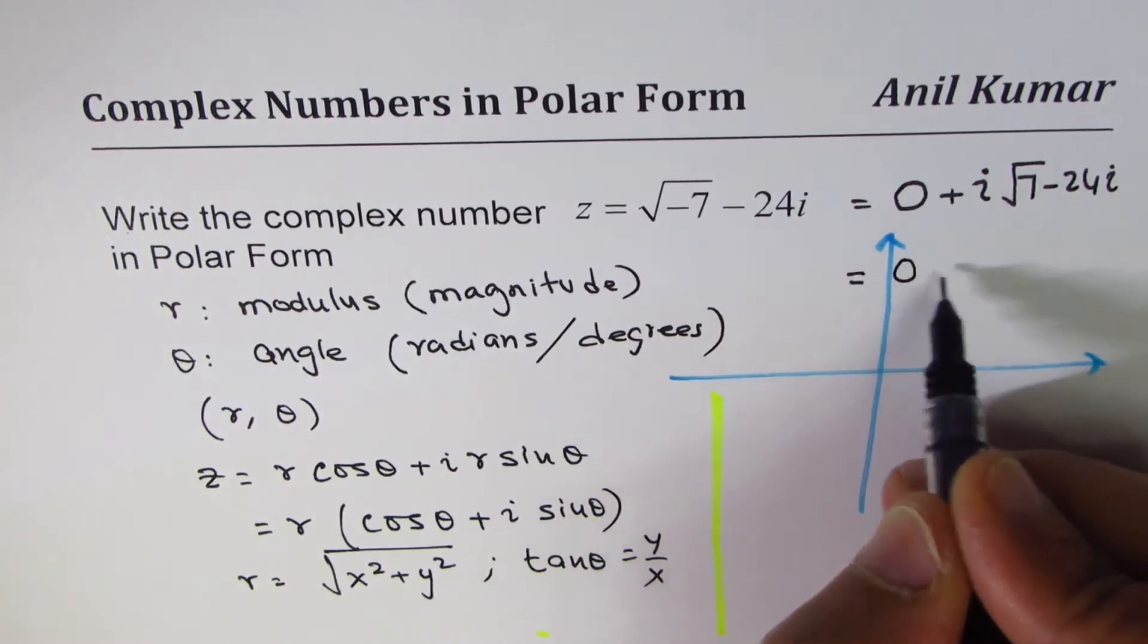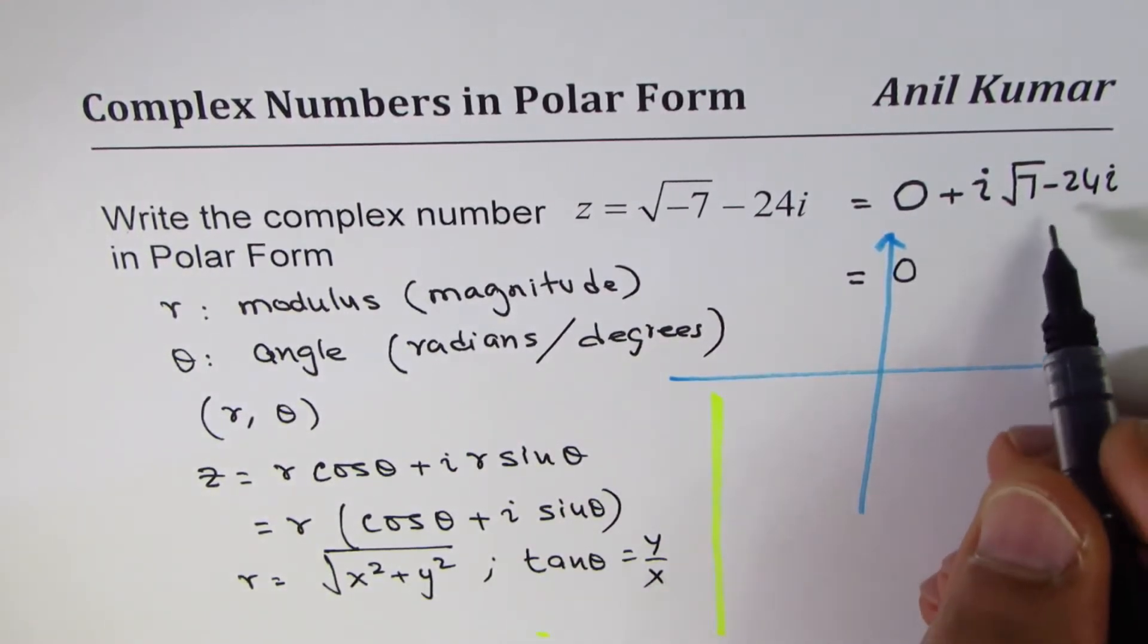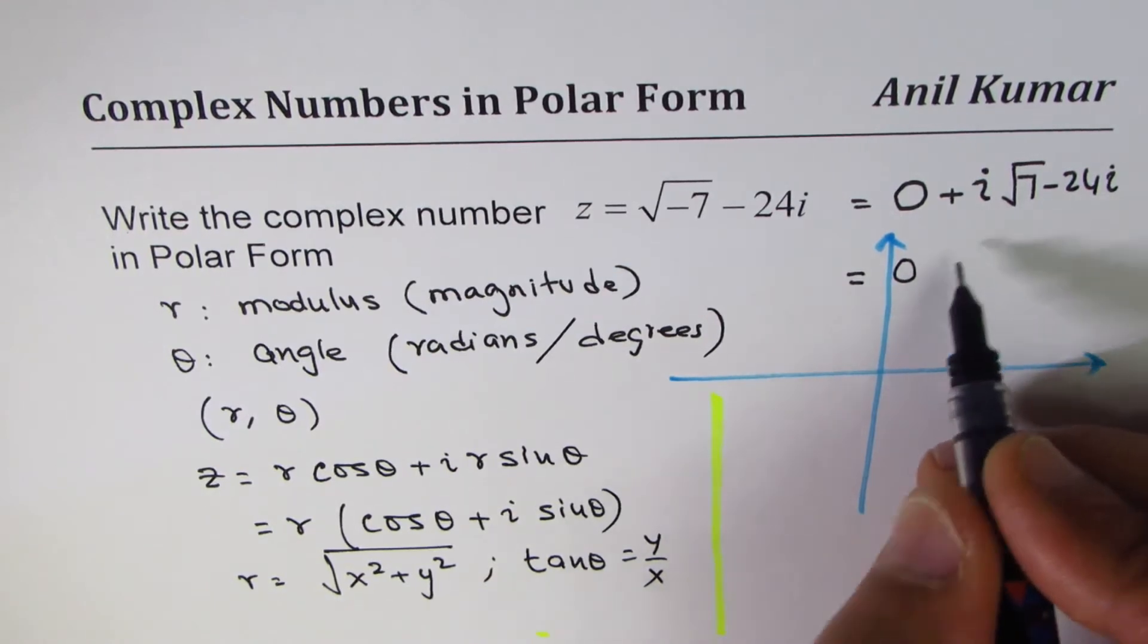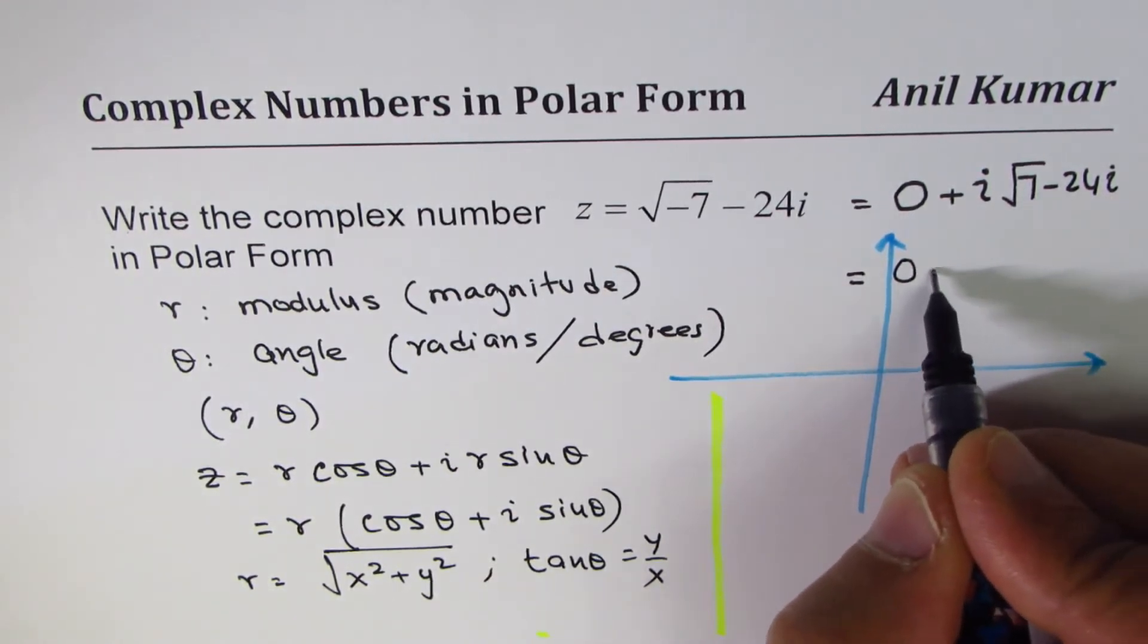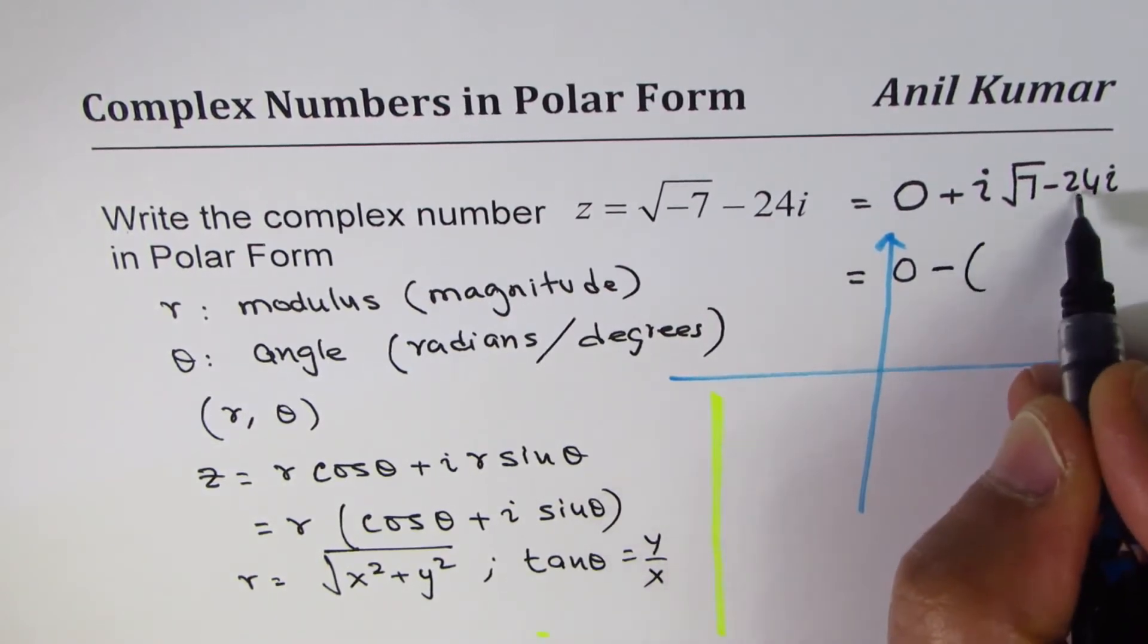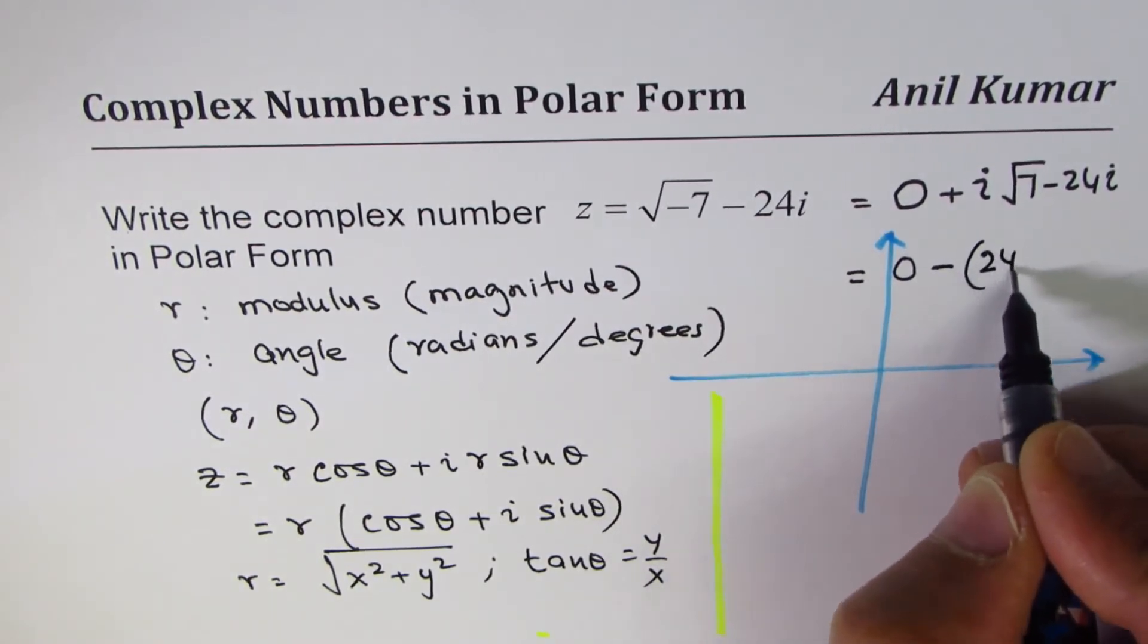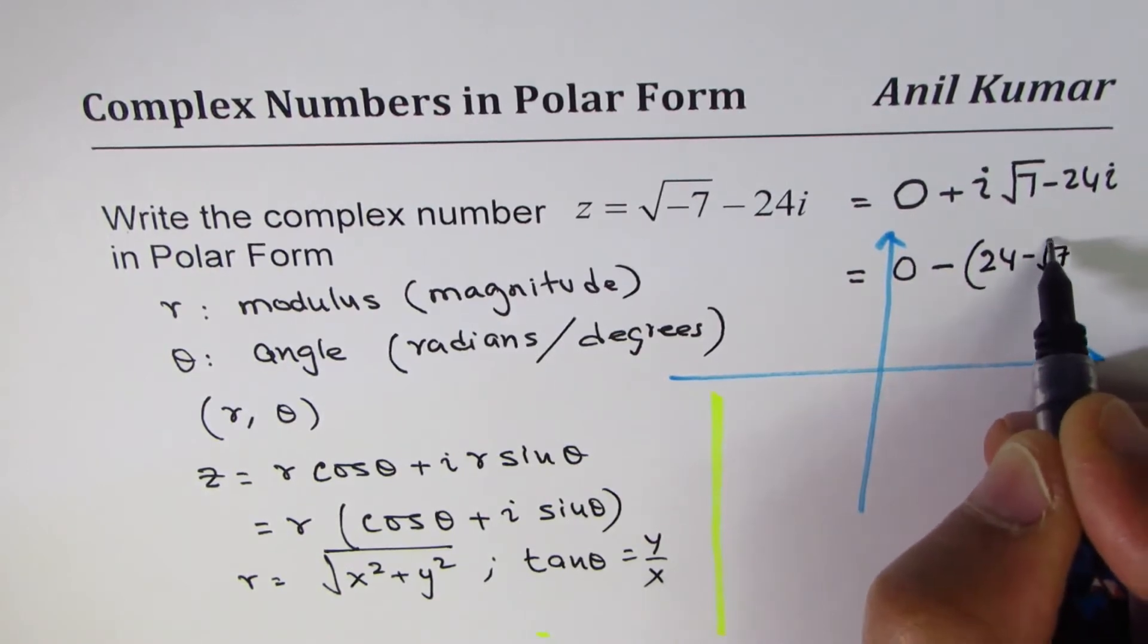Basically what I have here is that this complex number has real part as 0. If you like, you can write this as: I prefer to write minus here because 24 is a bigger number, so 24 minus square root 7, times i. Does that make sense to you?